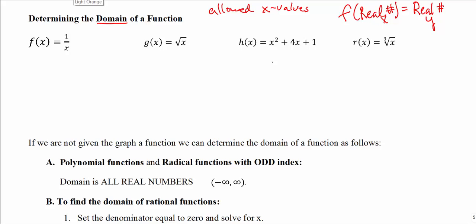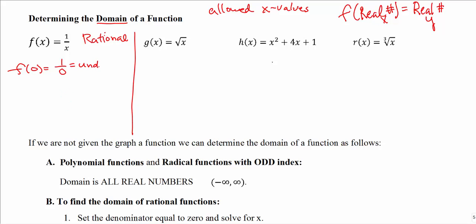For example, looking at the first function f(x) = 1/x — this is what we call a rational function, because it has a variable in the denominator. Something that would cause a problem here is if x equals 0. If 0 goes into the function in place of x, we get 1 over 0, and we know we're not allowed to divide by 0. This gives us something that is undefined.